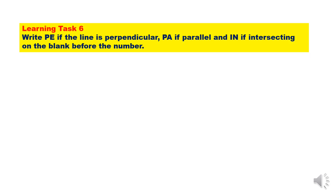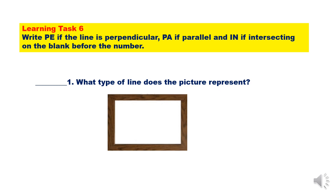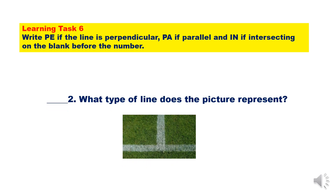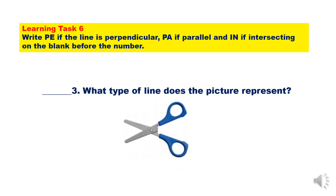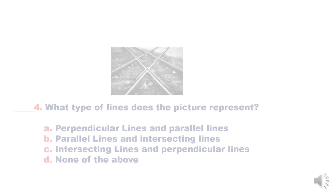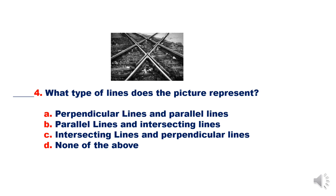For Learning Task 6, write PE if the line is perpendicular, PA if parallel, and IN if intersecting on the blank before the number. Number 1 — what type of lines does the picture represent? Numbers 2, 3, and 4 — what type of lines does the picture represent? Choose from: A. Perpendicular lines and parallel lines. B. Parallel lines and intersecting lines. C. Intersecting lines and perpendicular lines. D. None of the above.